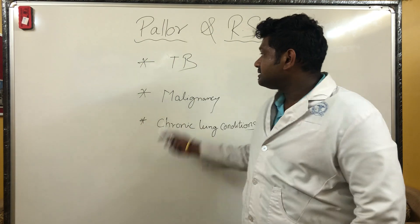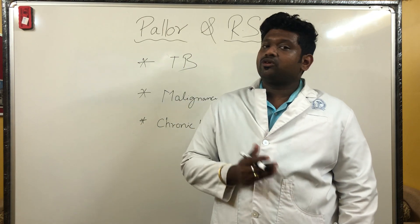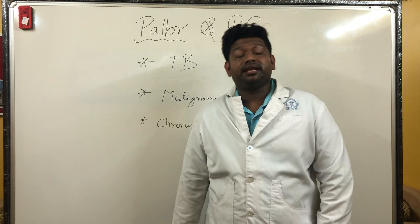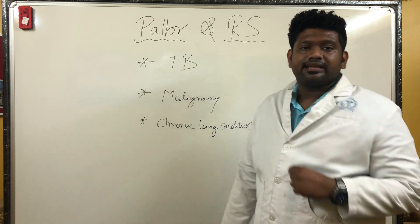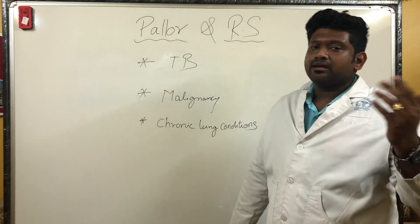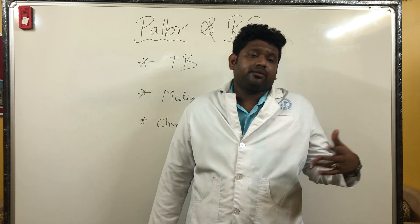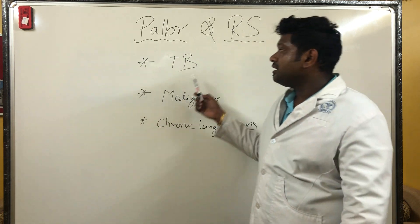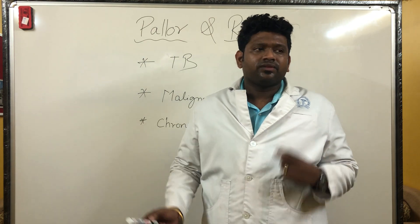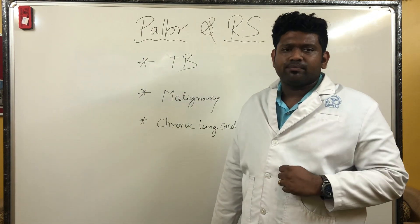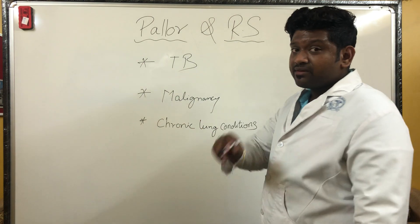The chronic lung diseases that can present with pallor include: number one, tuberculosis — TB patients commonly present with pallor; number two, lung cancers — malignancy and cancer cachexia reduce blood counts and cause anemia; and number three, other chronic lung diseases such as long-standing ILD and bronchiectasis. Very importantly, also consider cases of chronic small-volume hemoptysis over a long period, which can lead to pallor due to blood loss, though this is rare.